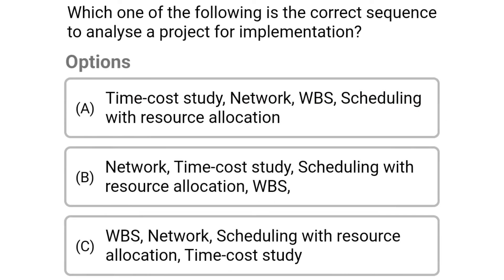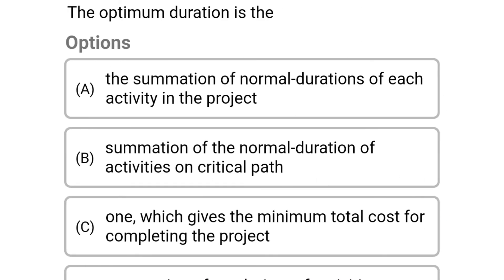Next question: which of the following is the correct sequence to analyze a project for implementation? Option A: time-cost study, network, WBS, scheduling with resource allocation. Option B: network, time-cost study, scheduling with resource allocation, WBS. Option C: WBS, network, scheduling with resource allocation, time-cost study. Option D: WBS, time-cost study, network, scheduling with resource allocation. The correct answer is option C: WBS, network, scheduling with resource allocation, and time-cost study.